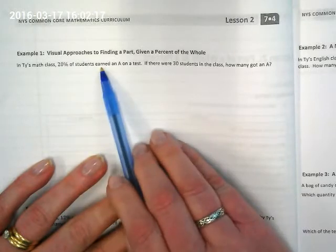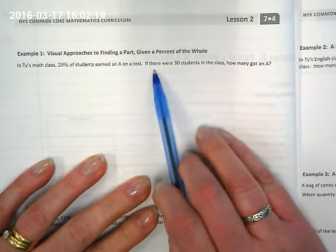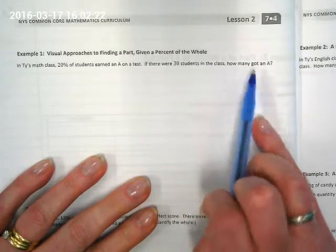In Tai's math class, 20% of students earned an A on a test. If there were 30 students in the class, how many got an A?